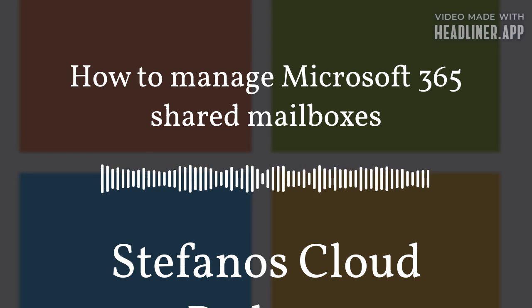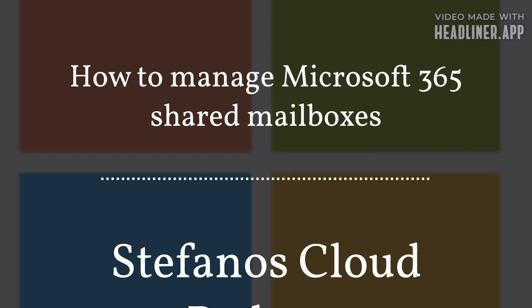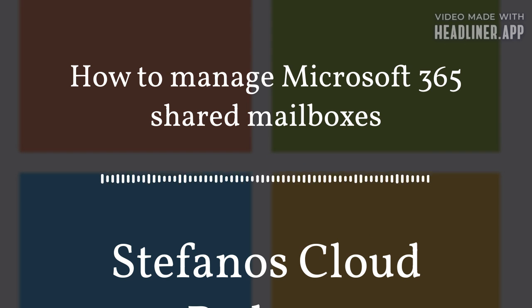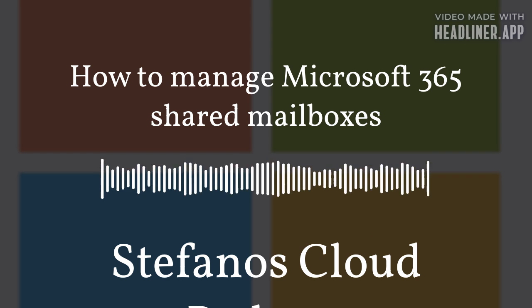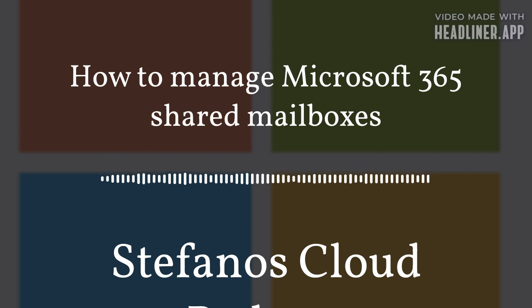Step 6: Under the Basic Information section, you can edit the Shared Mailbox name. Step 7: Under the Email Addresses section, you can edit the primary email address and the corresponding aliases.